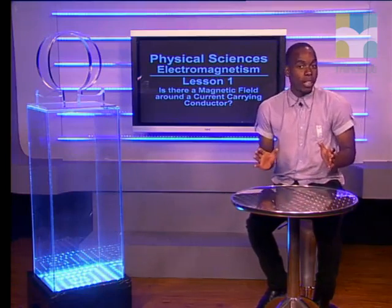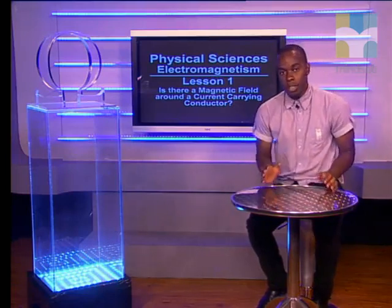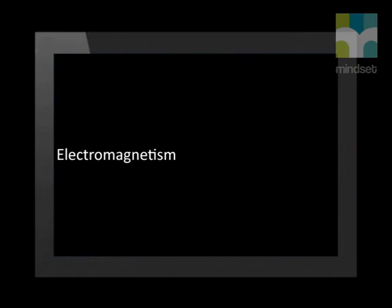Let's start by looking at the word electromagnetism. Electromagnetism is a branch of physical science that deals with the physical relationship between electricity and magnetism. The 'electro' refers to the charges and the electric fields associated with the charges, and the 'magnetism' deals with magnets and the magnetic field found around them.